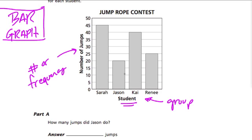All this bar graph is telling us — and some of the problem got cut off, but you can tell from the title — it's about a jump rope contest. These are the four students involved. And the bar, if you follow it up for each student, it tells you how many jumps they did. They ask two questions here.